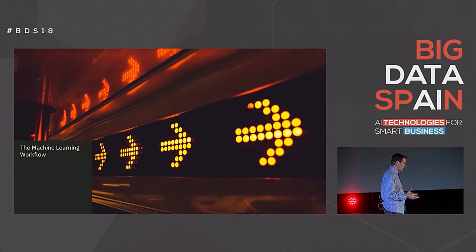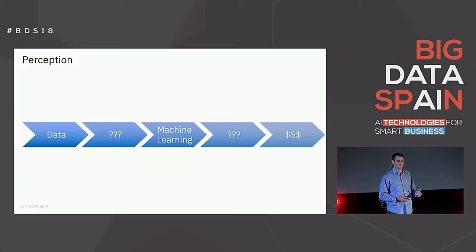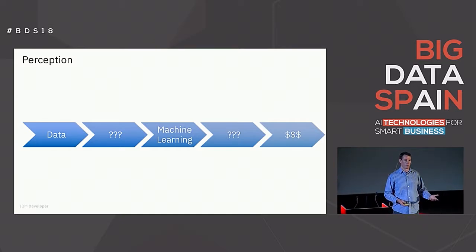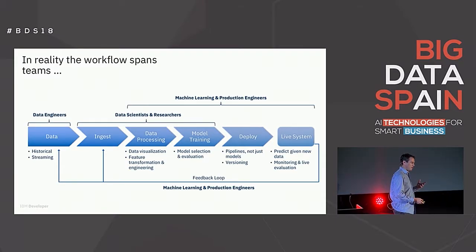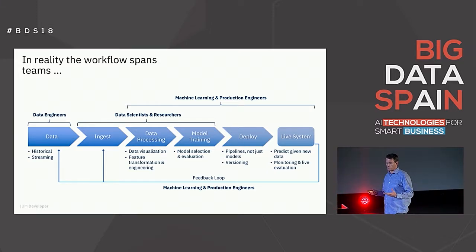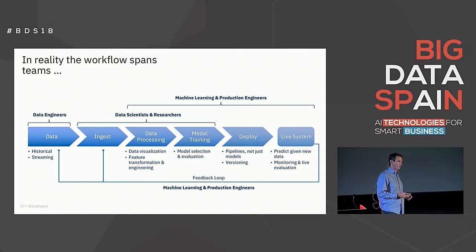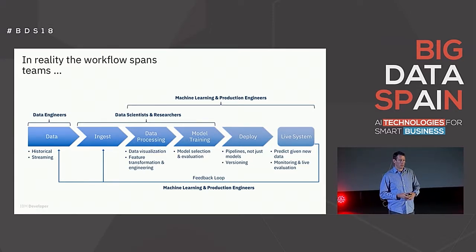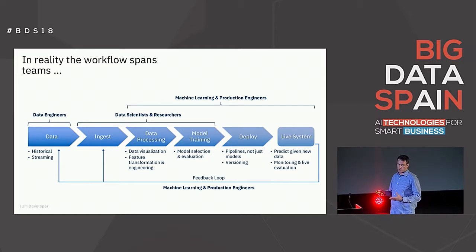The machine learning workflow is, as we all know, really simple: you start with data, you do some machine learning, and you profit, right? But in reality this is a really complex workflow and it spans teams. You do start with data, but that data can be sitting around in various data stores across formats — some historical, some arriving in real time in a streaming fashion. That's normally the domain of your data engineers, who are managing various data stores, metadata, cleansing, all of that.